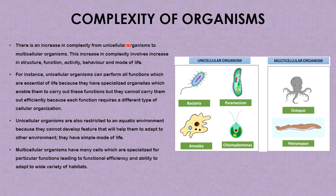Unicellular organisms can perform all functions essential to life because they have specialized organelles, but they cannot carry them out efficiently because each function requires a different type of cellular organization. Unicellular organisms are also restricted to an aquatic environment because they cannot develop features to help them adapt to other environments — that is, they have a simple mode of life. In the case of multicellular organisms, they have many cells specialized for particular functions, leading to functional efficiency and ability to adapt to a wide variety of habitats.